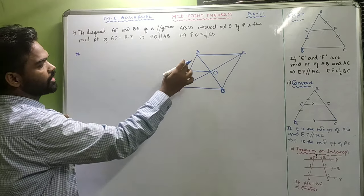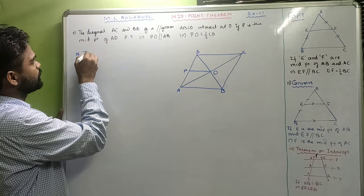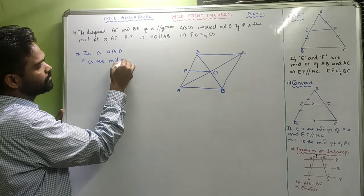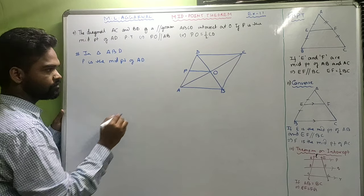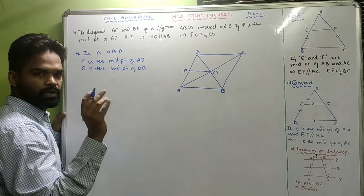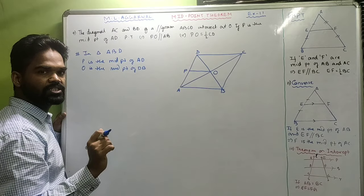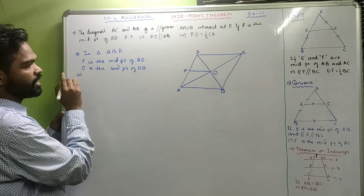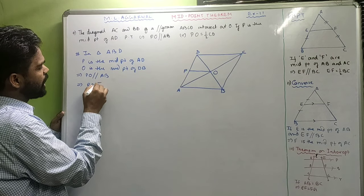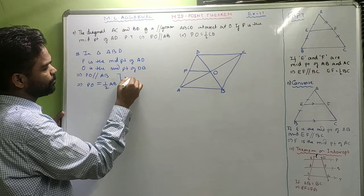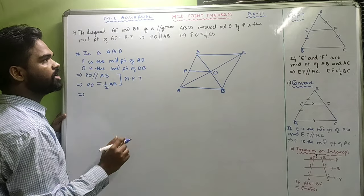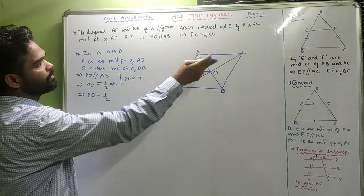In triangle ABD, P is the midpoint of AD — given — and O is the midpoint of DB. We know that in a parallelogram, the diagonals bisect each other at the point of intersection. Therefore by the midpoint theorem, PO is parallel to AB and PO equals half of AB. Now in a parallelogram, AB equals DC since opposite sides are equal. So we can write PO equals half of CD. Proved.